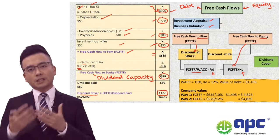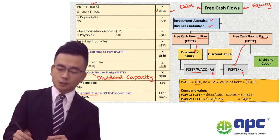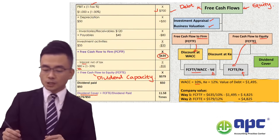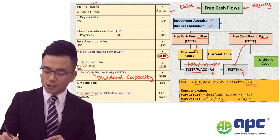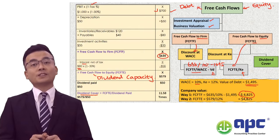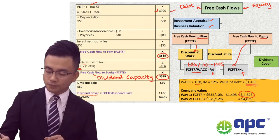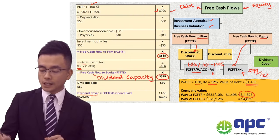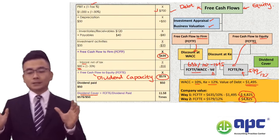For example, with WACC of 10% and FCFF of $635: $635 ÷ 10% minus debt value of $1,495 gives a business value of $4,825. Alternatively, using FCFE of $579 divided by the cost of equity of 12%, we also get $4,825. Free cash flows will be tested in this way — happy studying and congratulations, you've covered the topic of free cash flows in the ACCA Advanced Financial Management paper.